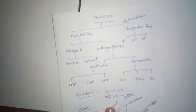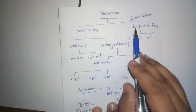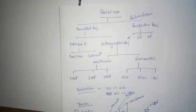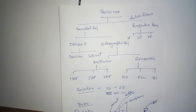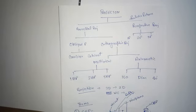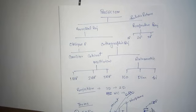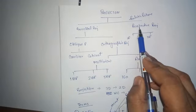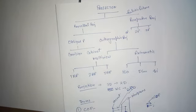Now coming to the types of projections. Projection has two types: Parallel Projection and Perspective Projection. In Parallel Projection, the COP is at an infinite distance from the object. I just want to give you a brief introduction here — only one or two points about parallel projection and perspective projection.